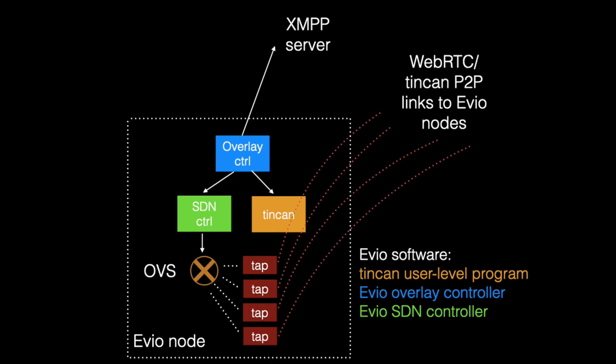The only centralized component is the bootstrapping service, needed only for short communication to bootstrap P2P links. Once links are bootstrapped, all communication and control is decentralized, allowing the system to scale without user intervention in overlay administration.